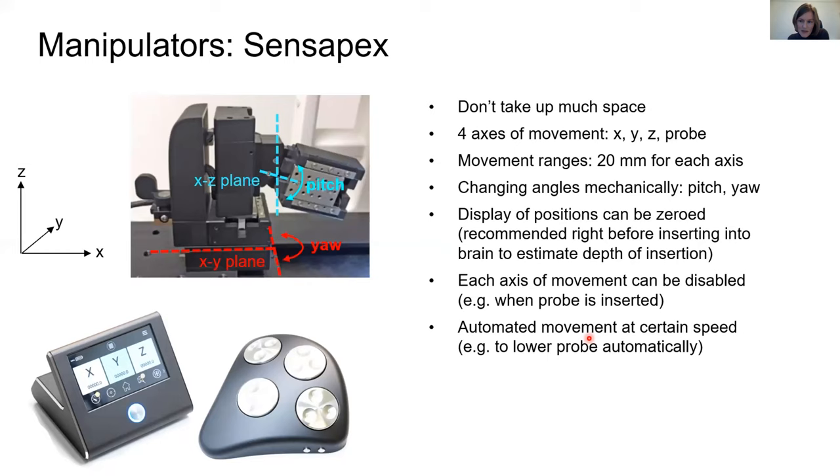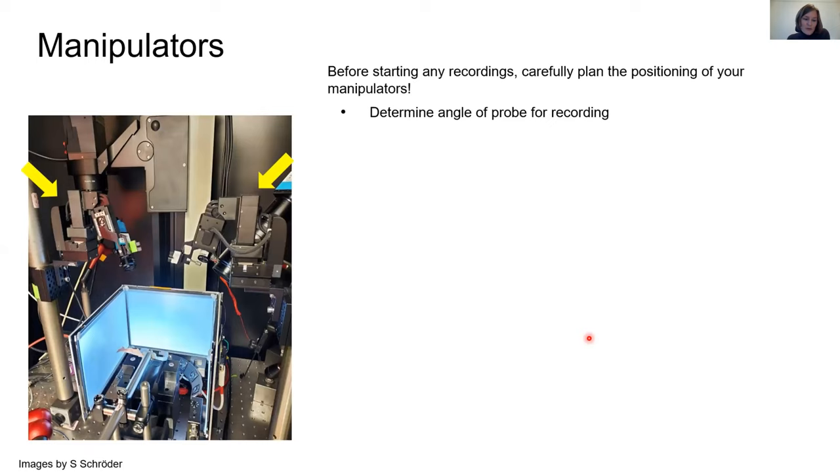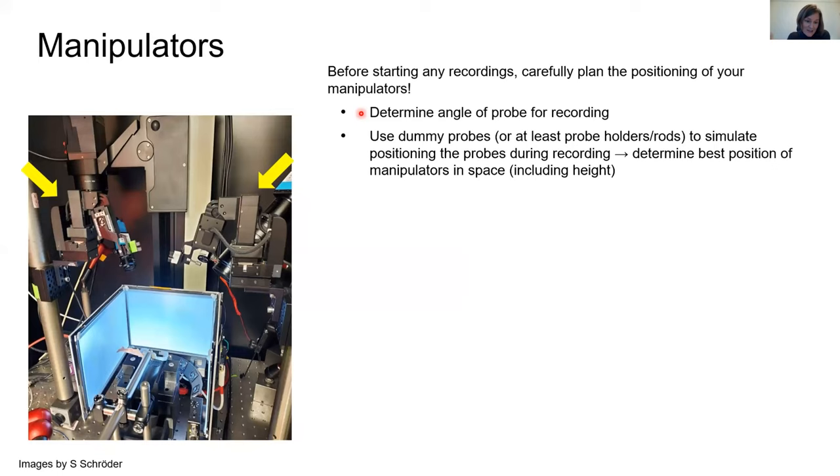Before you do any recordings, you should really carefully plan how to position your manipulators. First thing is to think about and determine in which angles you actually need to insert your probe into the brain so you can record from all the areas you want. Then you need to place your manipulators in the correct angles and you should use some dummy probes or at least the rods that hold the probes to simulate the positioning so that you can be sure how you place the manipulators in space. This will take some time.